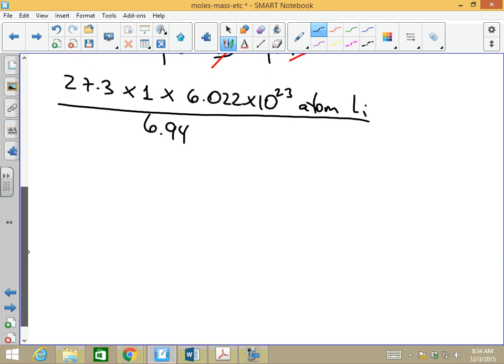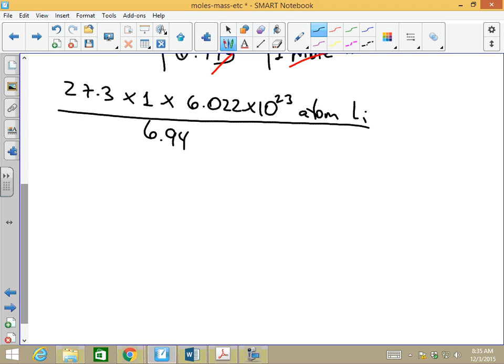Now, if I do, I'm going to do this on my calculator. 27.3 times, open parenthesis, 6.022 times 10 to the 23rd, close parenthesis, divide that by 6.94.